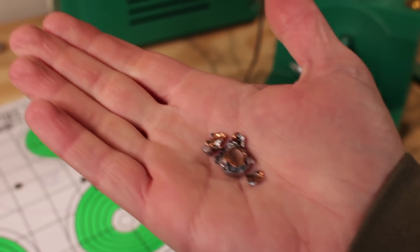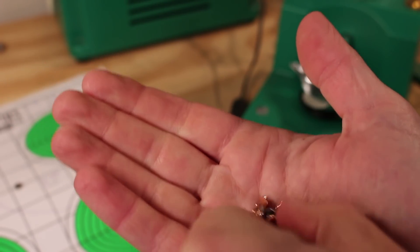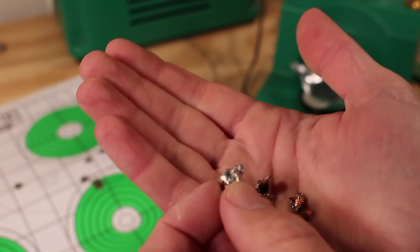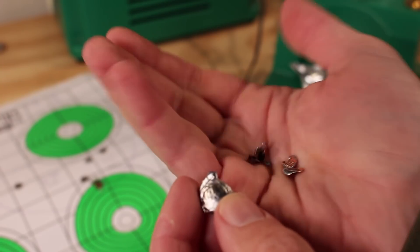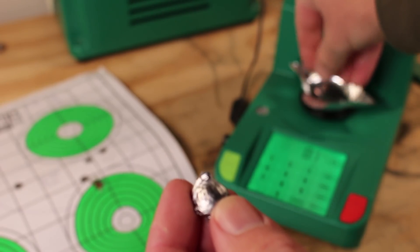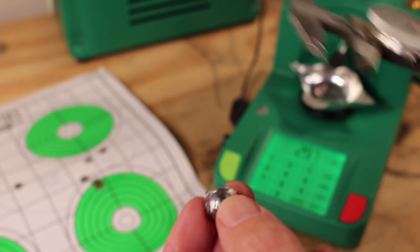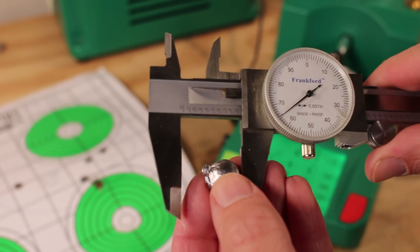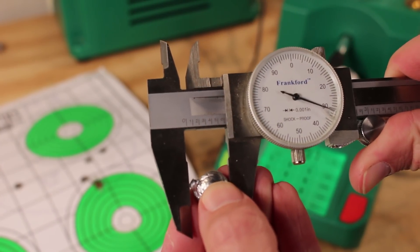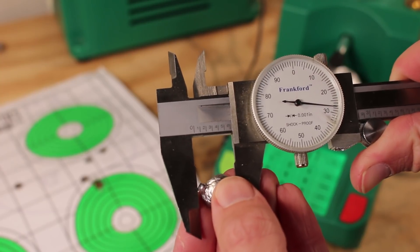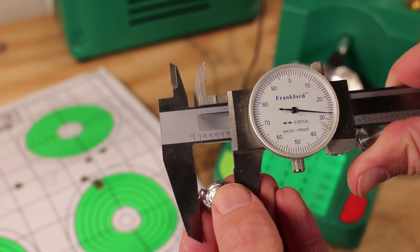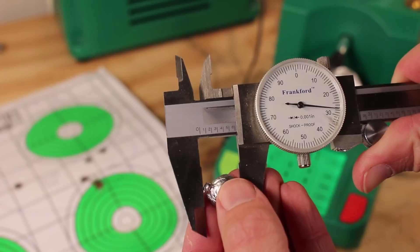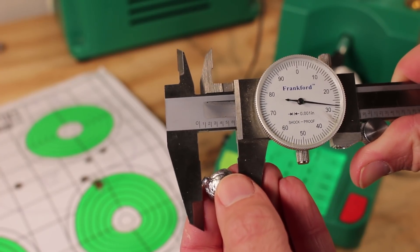Here's what's left of our 100-yard 350 Legend bullet, and it's certainly wide. It did mushroom out very well, but you can see that it did peel chunks off. Let's put those little chunks in there, but let's see how wide this got. It looks like a maximum width right here of 0.628. Huge.